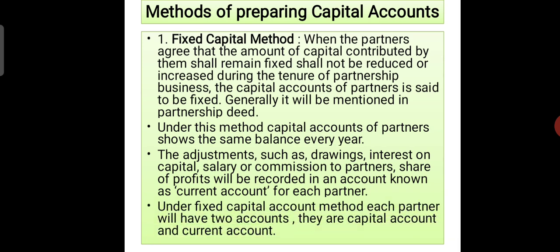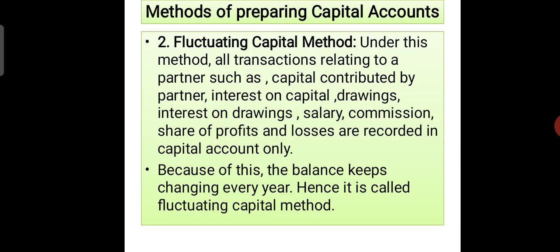Fluctuating Capital Method: Under this method, all transactions related to partners — such as capital contributed, interest on capital, drawings, interest on drawings, salaries, commission, and share of profits and losses — are recorded in the capital account only. Because of this, the balance keeps changing every year; hence it is called the fluctuating capital method.